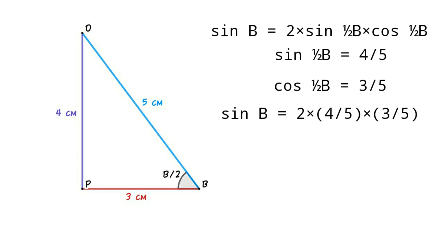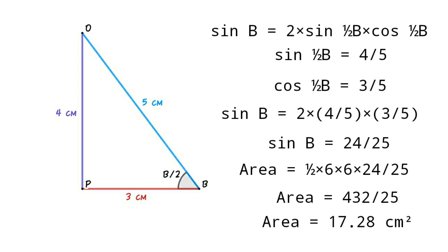So sin B equals 2 times 4/5 times 3/5. That is, sin B equals 24/25. Then area equals one-half times 6 times 6 times 24/25. So area equals 432/25, or area equals 17.28 square centimeters.